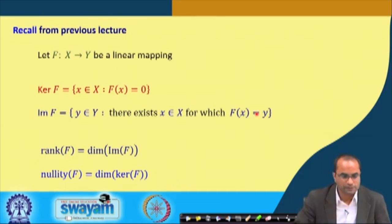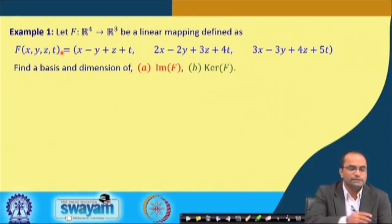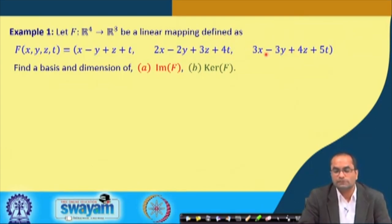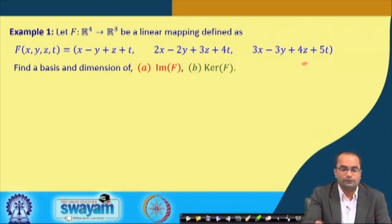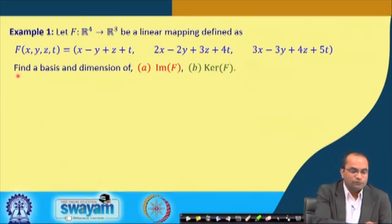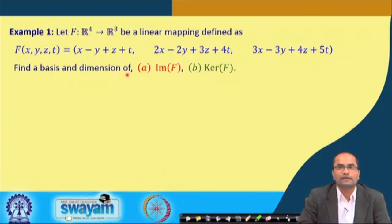We start now with an example where f is a linear map from R⁴ to R³, defined by: f maps (x, y, z, t) to the vector (x − y + z + t, 2x − 2y + 3z + 4t, 3x − 3y + 4z + 5t). This maps an element from R⁴ to an element in R³. We want to find a basis and the dimension of the image of f and then of the kernel of f.